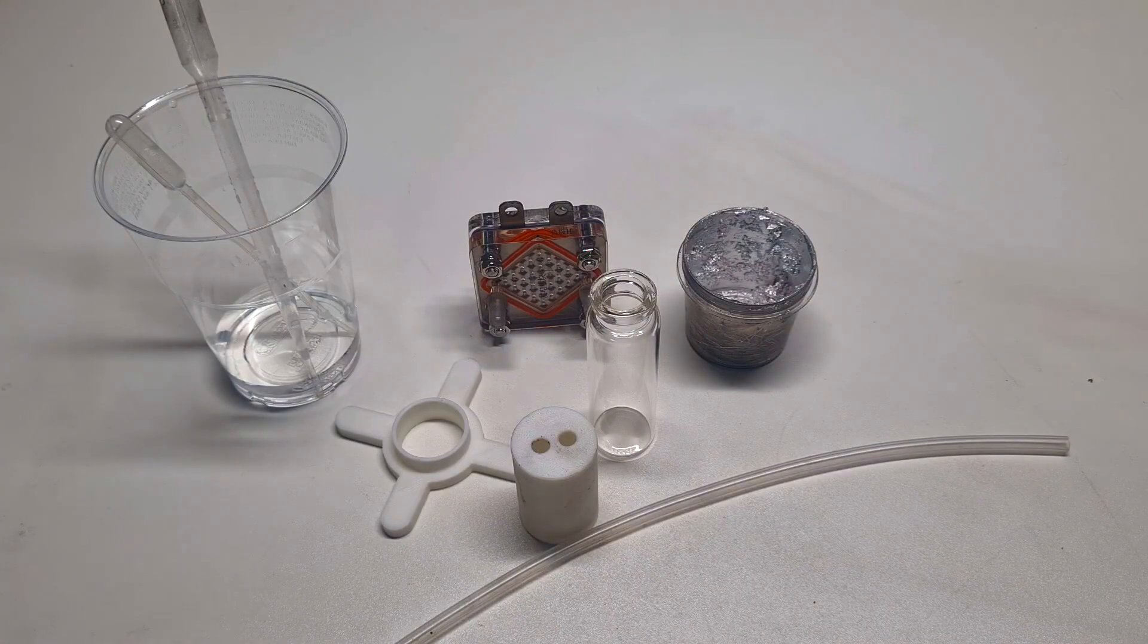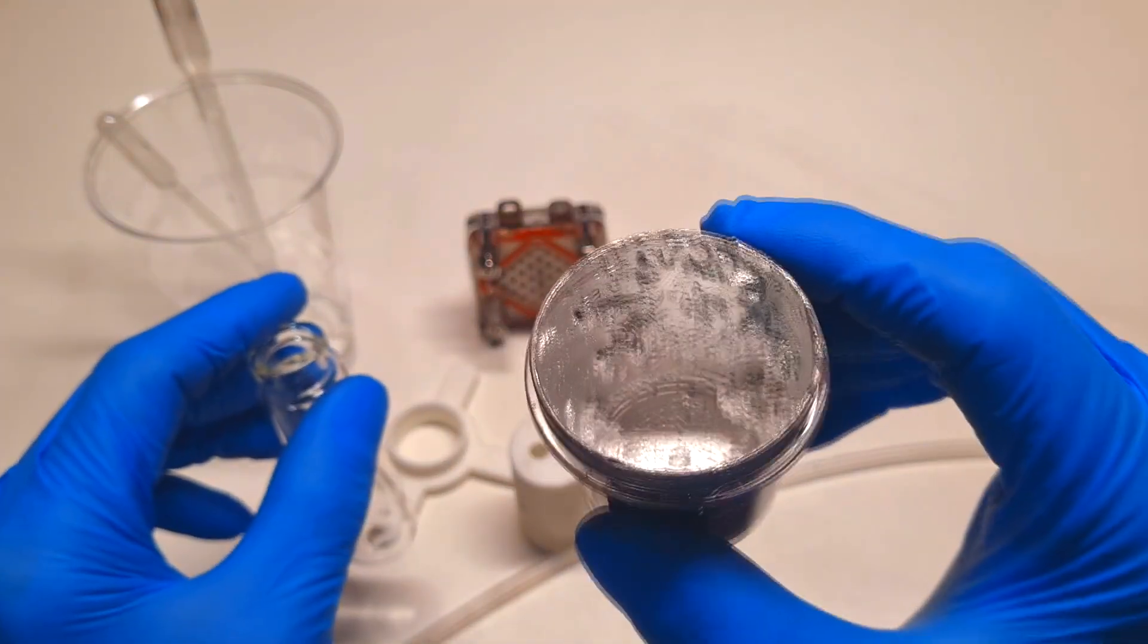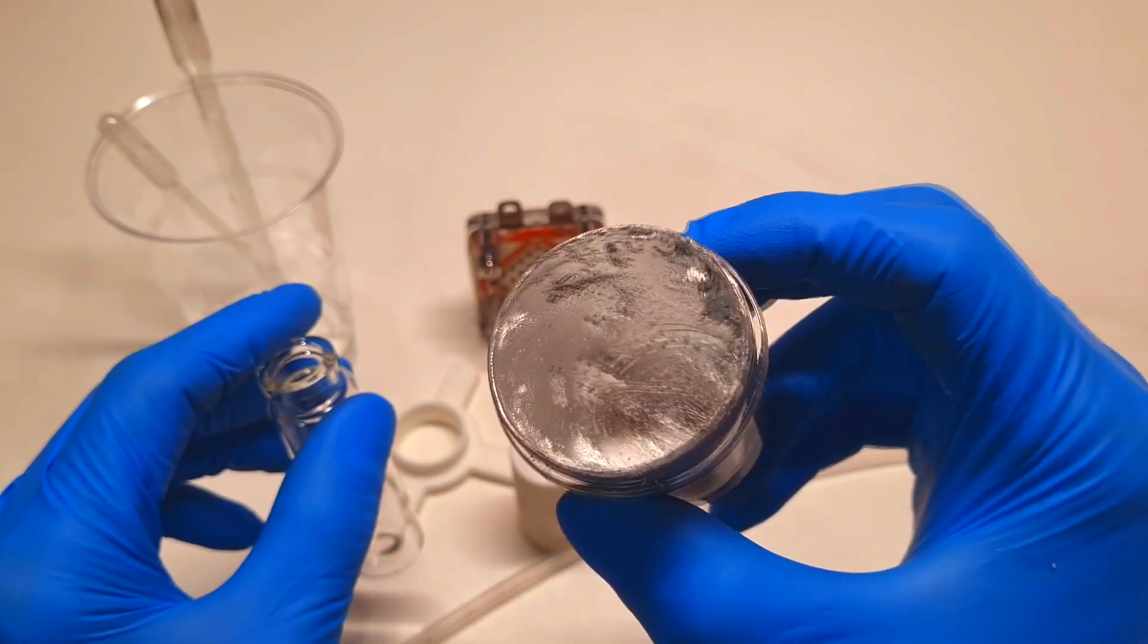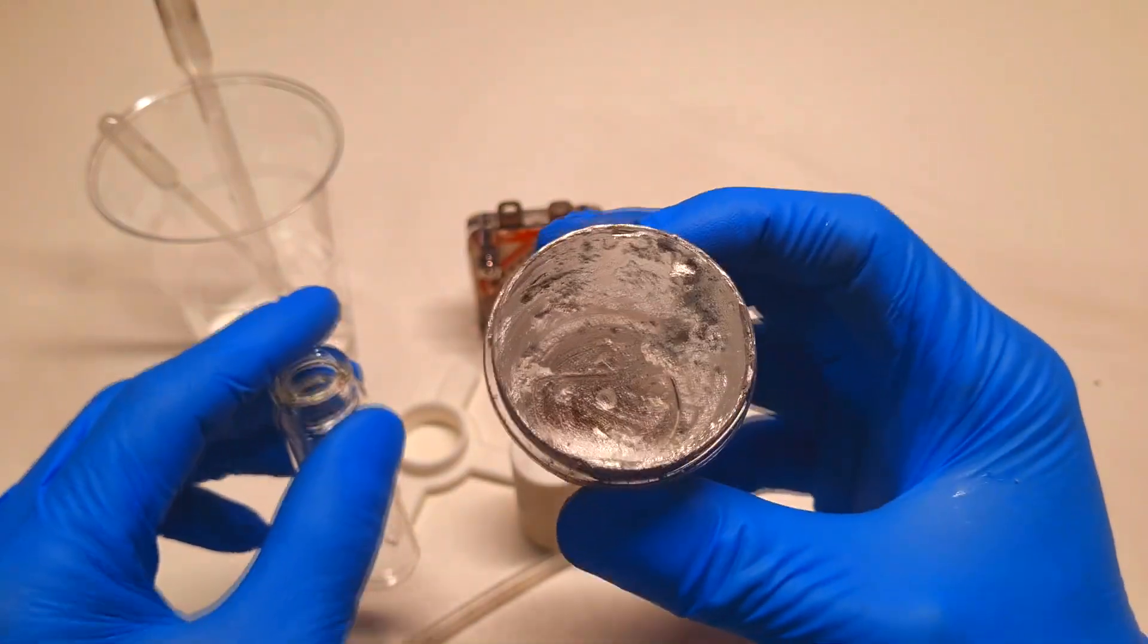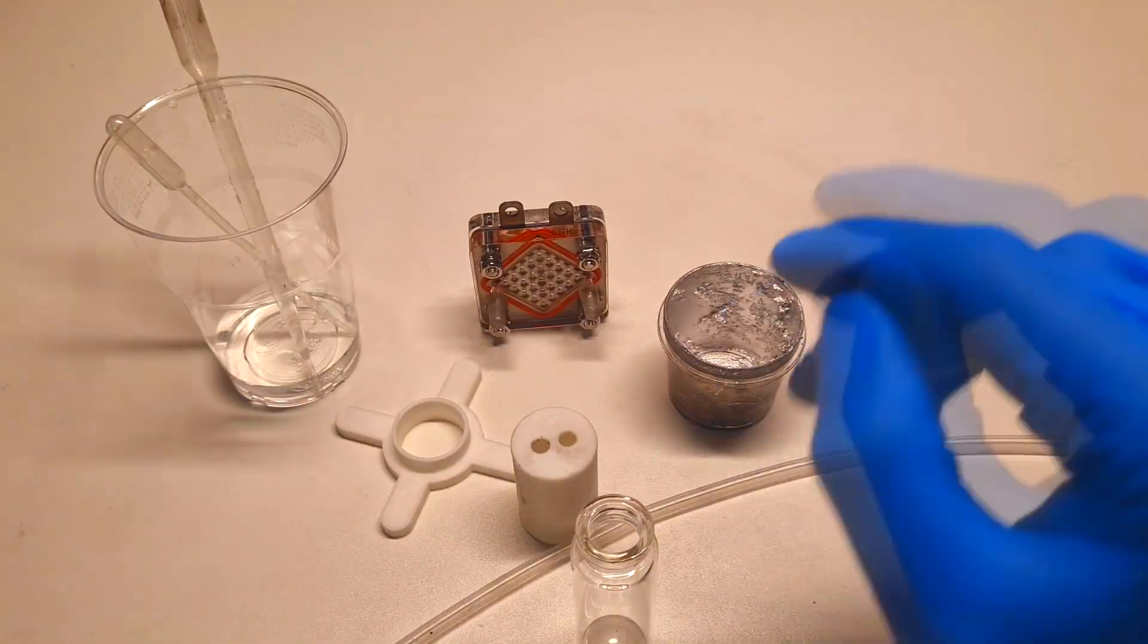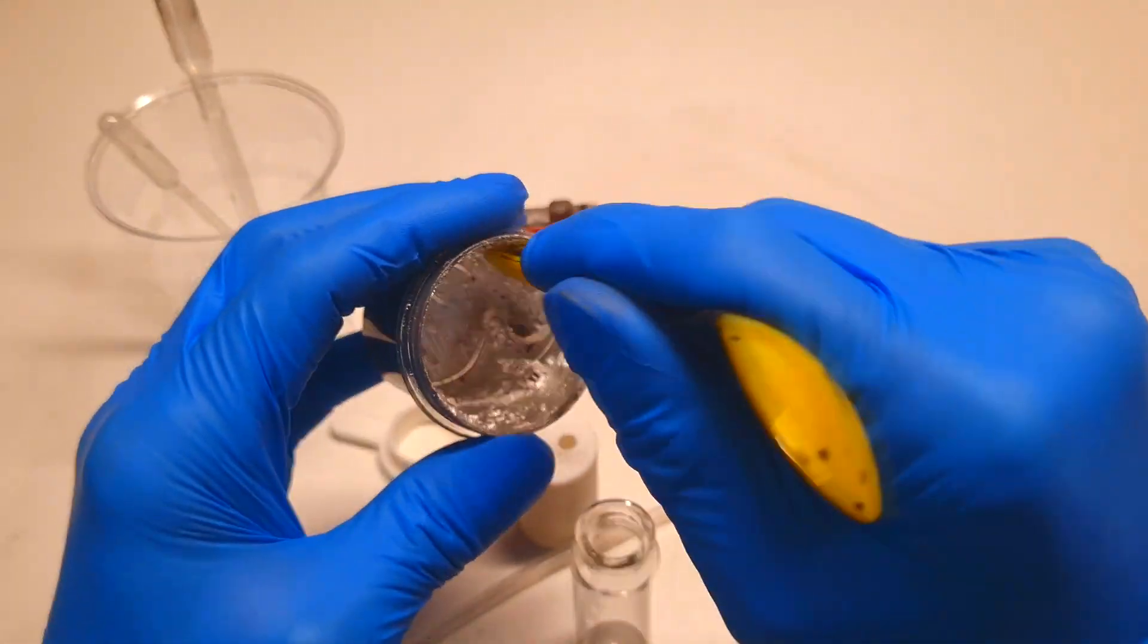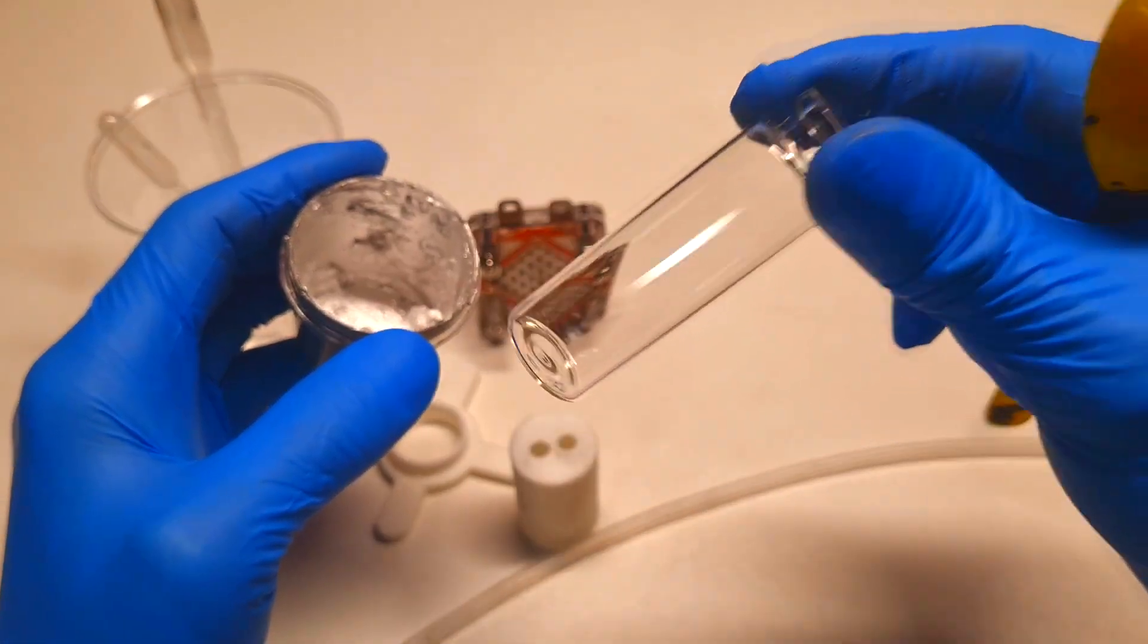Now I will put everything together. Here I have a little bit of this aluminum gallium alloy which is made from aluminum foil. And this aluminum alloy I will put into this glass jar.